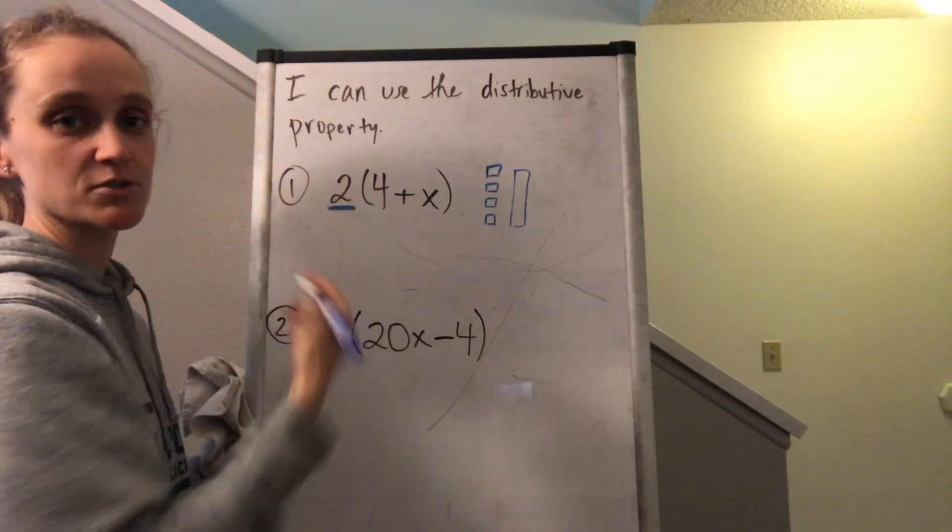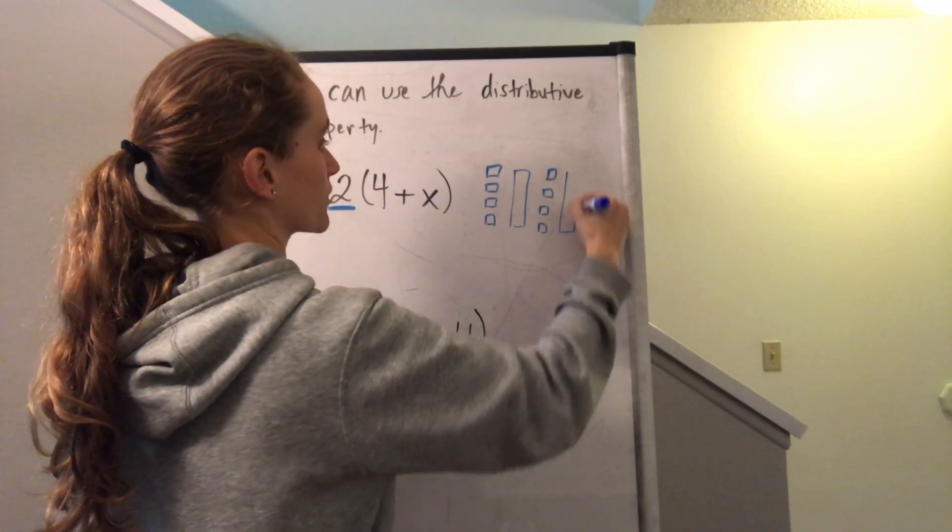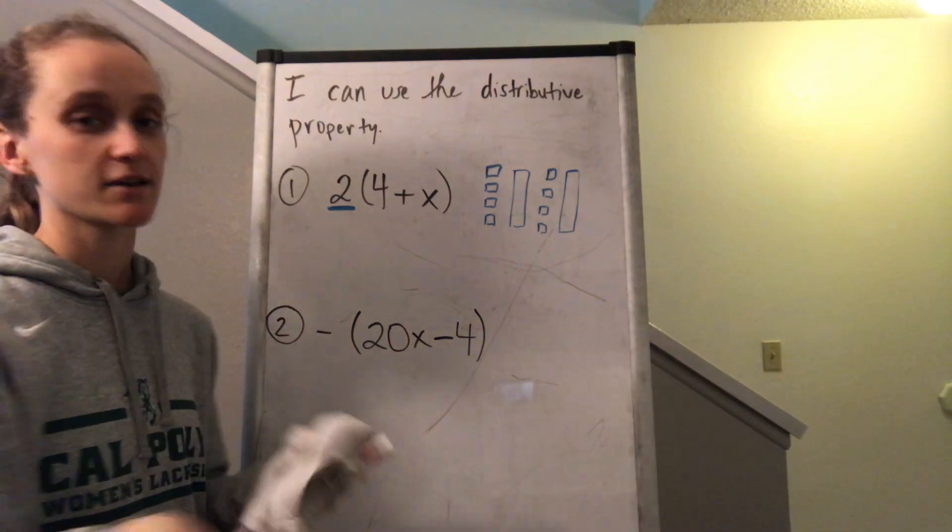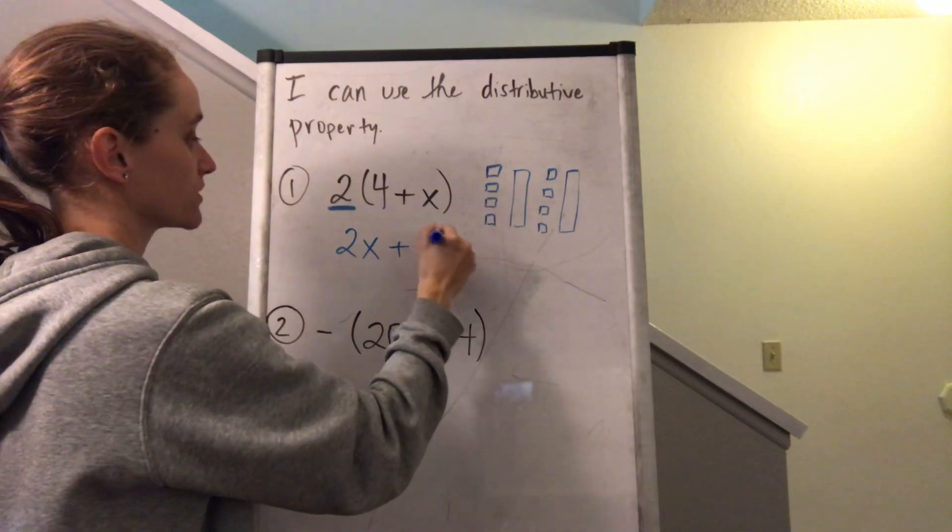And then if I have two groups of that, I'm just going to draw that again. So I have four more little units and then one more X. So if I was to add it up, I'd have two X tiles—that's two X—plus I have eight units.